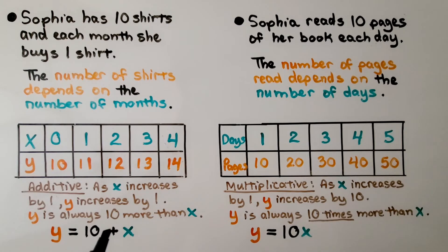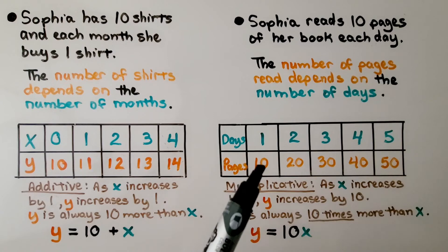See the difference? This is 10 + X for additive and this is 10X for multiplicative. This increased 1 and 1. This increased 1 for every 10.